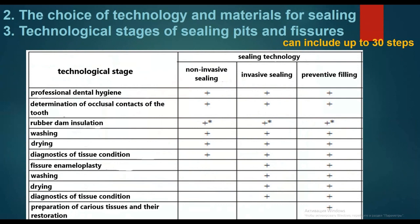The choice of technology and materials for sealing: technological stages of sealing pits and fissures can include up to 30 steps. For non-invasive sealing: professional dental hygiene, determination of occlusal contacts, optional rubber dam insulation, then washing, drying, and diagnostic of tissue condition.